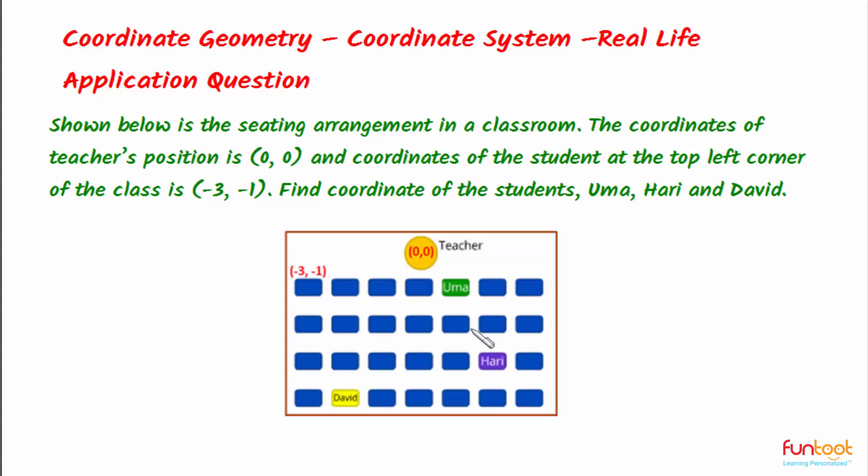Here a seating arrangement in the class is shown. The coordinate of the teacher's position is (0, 0) and coordinates of the student at the top left corner of the class is (-3, -1). We have to find the coordinates of students Uma, Hari, and David. Let's discuss the approach for doing this question. This arrangement can be thought of as an XY Cartesian coordinate system.